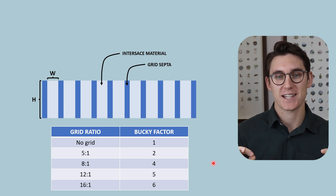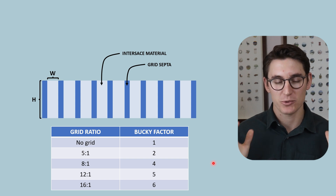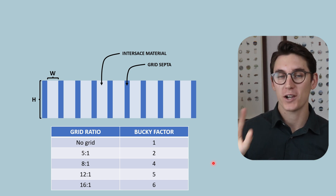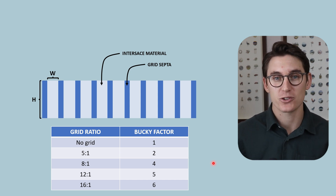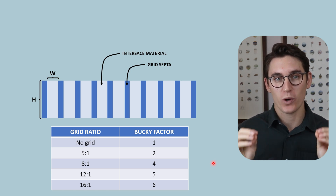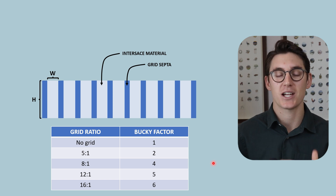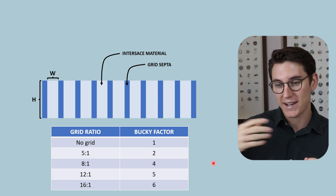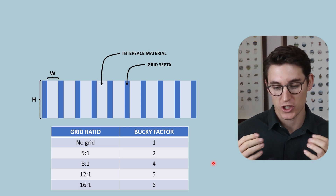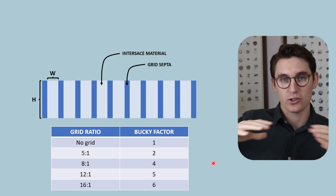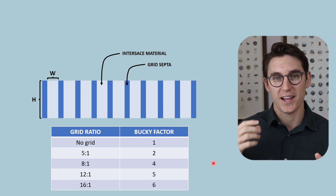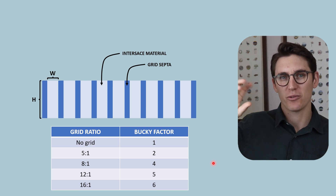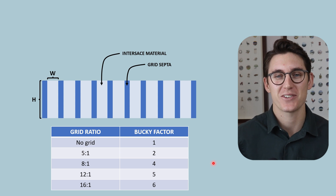Having spent three talks on scatter, it's worth noting why — in reviewing multiple past papers, two major themes came up above all others: scatter and the factors influencing the x-ray beam. I've dedicated a whole section in the linked question bank to scatter questions, as it comes up repeatedly in exams. If you're studying for part one or registry exams, I'd highly recommend those past paper questions. In the next talk, I'll look at magnification and geometric blurring — including how the air gap technique causes magnification and how the focal spot contributes to geometric unsharpness.